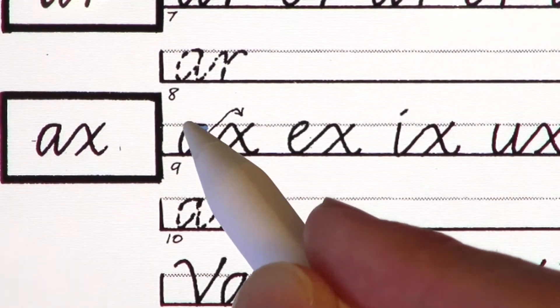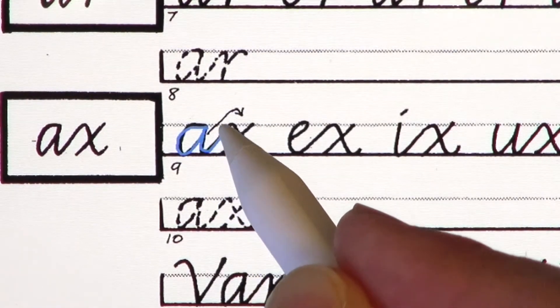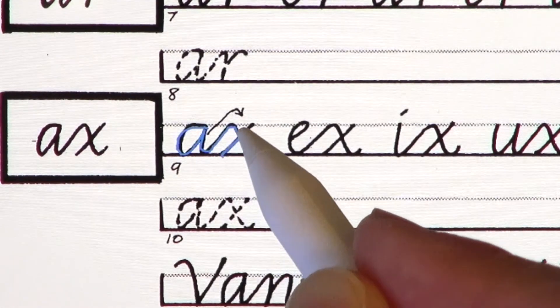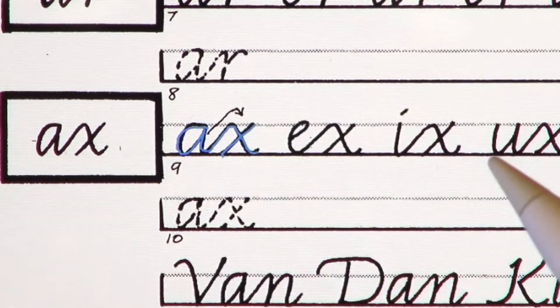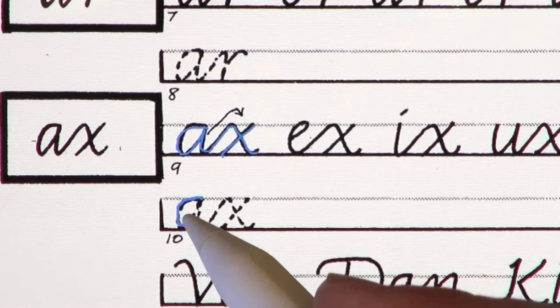In this case, we're going to be joining into X, so we can take advantage of that soft angle entrance serif into the letter X, like so. And now let's trace again over the model on the line below.